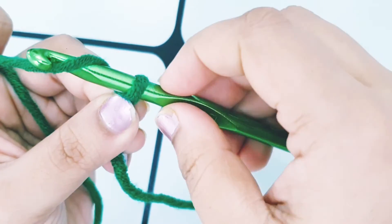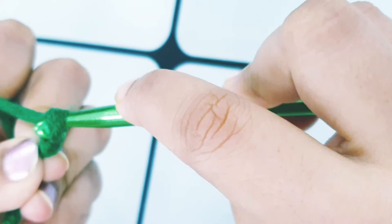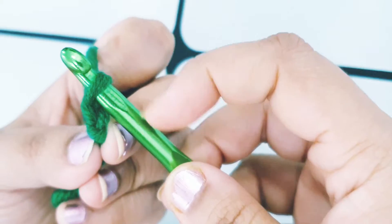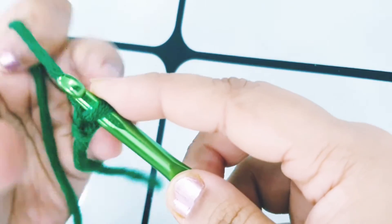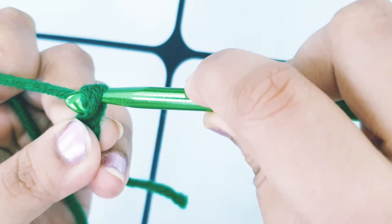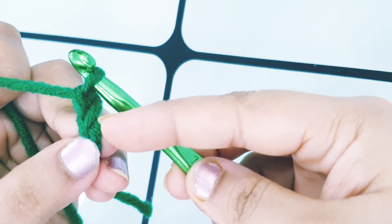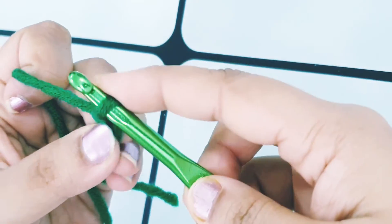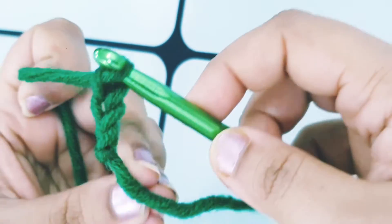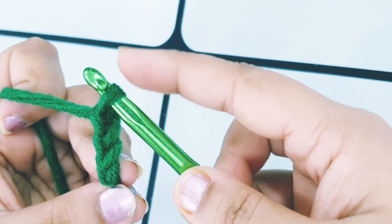And yarn over, pull through the loop on your hook. Okay, so here we made our chain one or first chain and we have a loop on our hook. Again, yarn over, pull through the loop on your hook. We have another chain and a loop on the hook. Yarn over, pull through the loop on your hook. Now we have three chains and a loop on the hook.